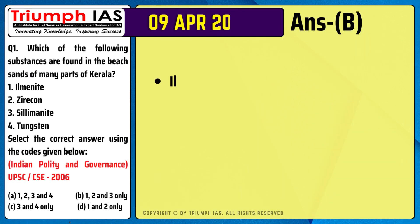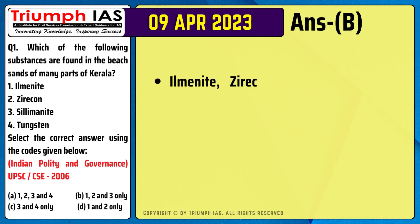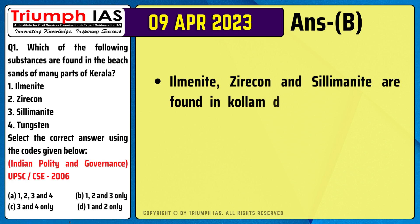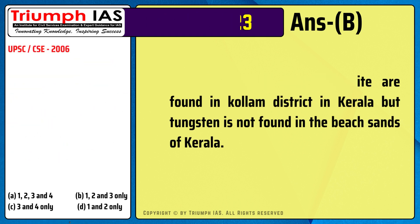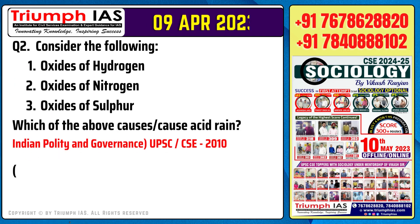The correct answer is option B. Ilmenite, Zircon and Sillimanite are found in Kollam district in Kerala, but Tungsten is not found in the beach sands of Kerala. Question number 2.